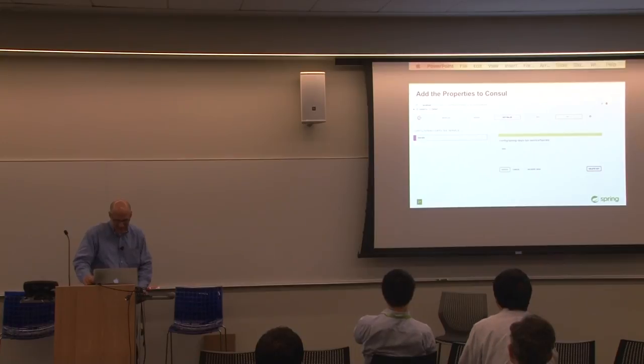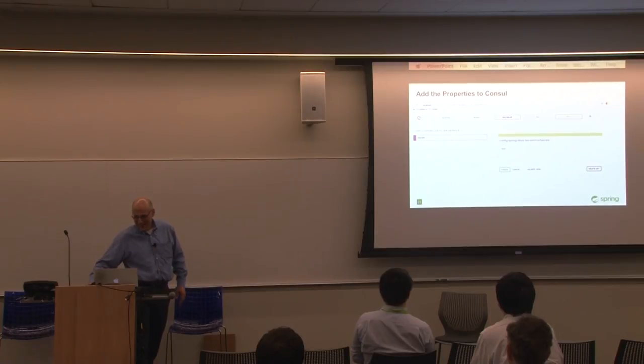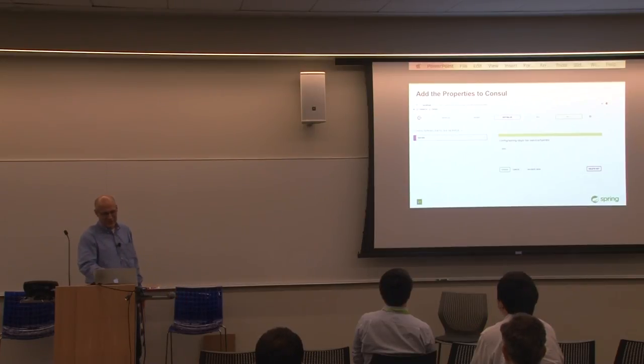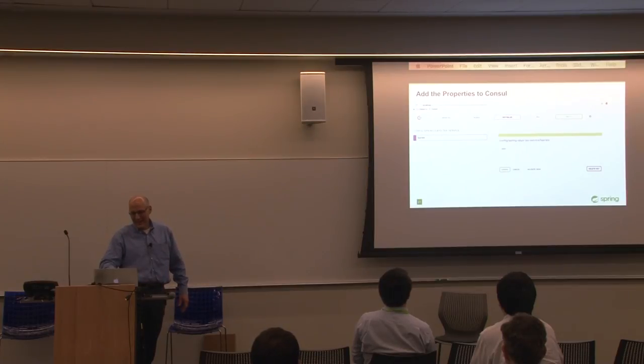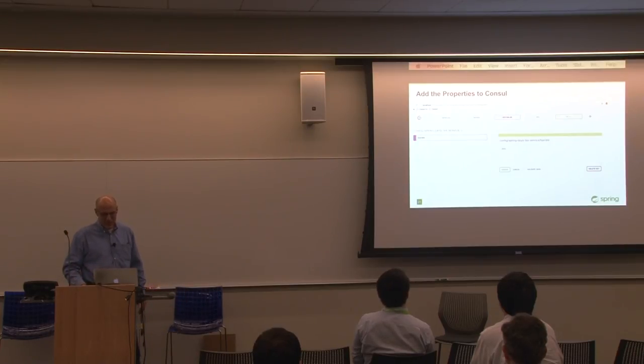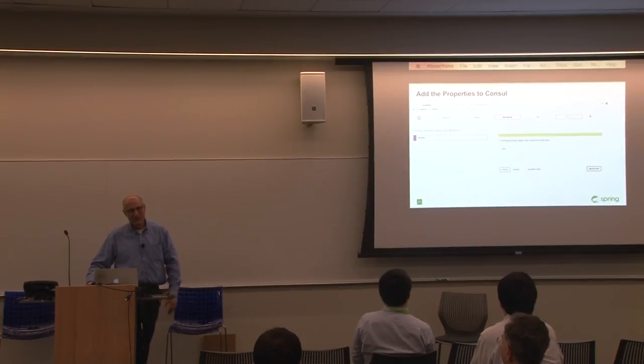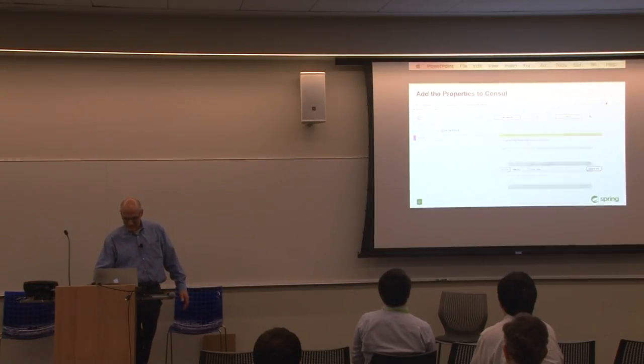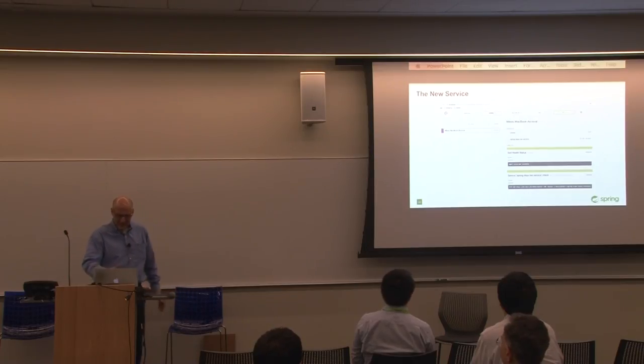This is a picture of the Consul user interface. User interfaces is definitely not one of their strong suits. Essentially, you can put the properties almost anywhere you like, but the convention that's set up by the integration is it's going to put it in a directory called config, then the application name, and then the property. So here you'll see config and then you'll see spring-days-tax-service, which I actually changed in the app to just tax-service. And then the tax rate. All of the properties are organized by application and they all fall under the config directory. You can see here I'm listing all of the services. You can list all the servers, all the endpoints that are available.